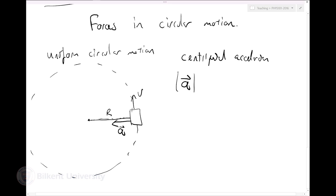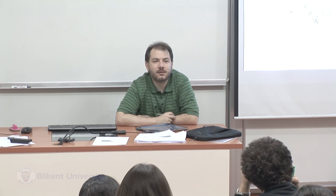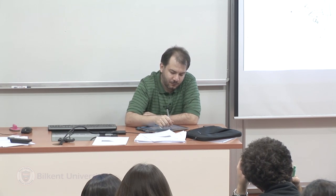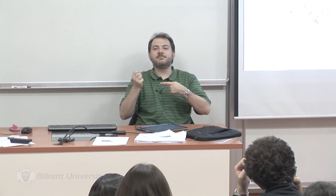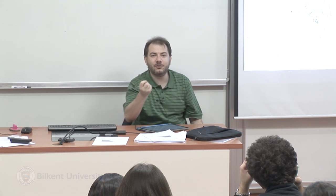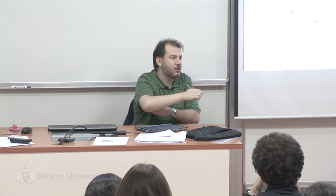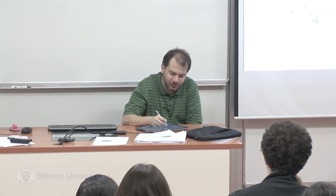Beyond kinematics, I can think about dynamics: what is causing this centripetal acceleration? If my mass is accelerated, there must be a force causing it. Why is the mass going around in circles? Newton tells me that without any forces, it would move in a straight line with constant velocity. There must be a force making the velocity change direction - and clearly that force is the tension in the rope. So F = ma, meaning the tension equals m·V²/R.